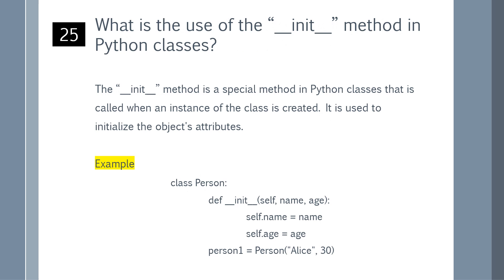What is the use of the __init__ method in Python classes? The __init__ method is a special method in Python classes that is called when an instance of the class is created. It is used to initialize the object's attributes. You can refer to the example shown on the screen.